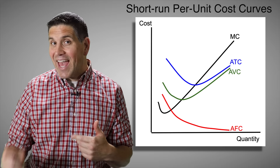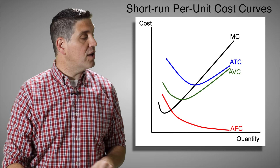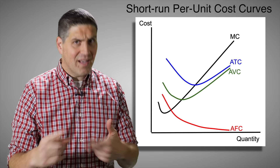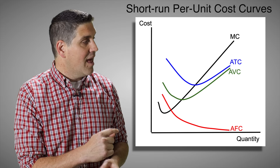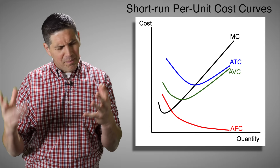There are basically four per unit cost curves you need to know: marginal cost, average total cost, average variable cost, and average fixed cost. The graphs always look the same. Marginal cost goes down then back up. Average total cost, because of math, goes down, hits a minimum, then goes back up. Average variable cost goes down below the ATC then gets closer and closer to the ATC. And average fixed cost is an asymptote.